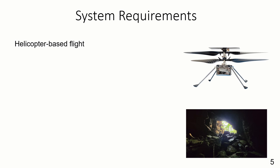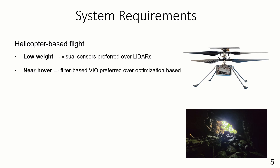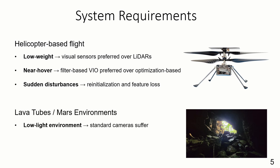EKL-TVIO satisfies key constraints posed by the target scenario. On the one hand, helicopter-based flight requires low-weight sensors like cameras, making heavier alternatives like LIDARs infeasible. Additionally, helicopters usually operate near hover conditions or perform fast takeoffs, meaning that VIO needs to initialize quickly and robustly and with small baselines. The back-end of EKL-TVIO is especially suited for this. Similar features are required during sudden disturbances such as oscillations, which may lead to a significant loss of features. If all features are lost, we would require fast recovery capabilities in mid-air. Lava tubes are a low-light environment which cause severe underexposure or motion blur artifacts in standard camera images, motivating the use of an event camera.